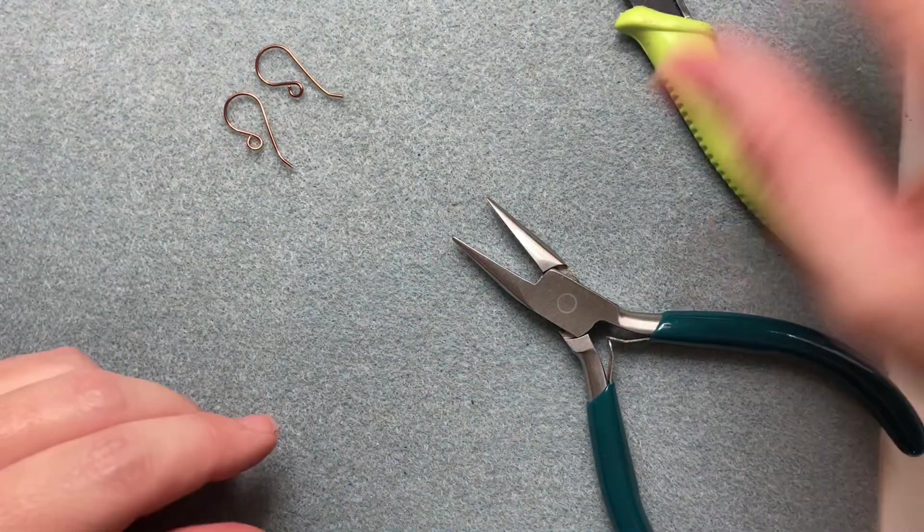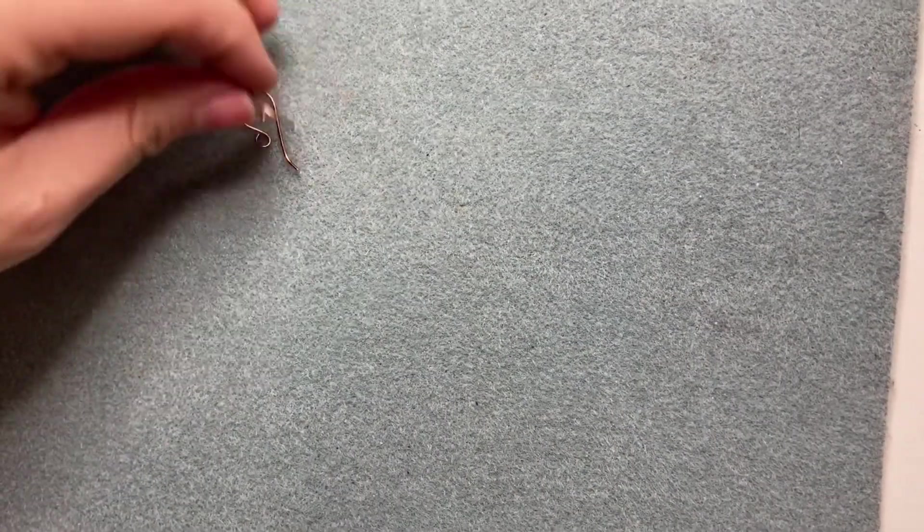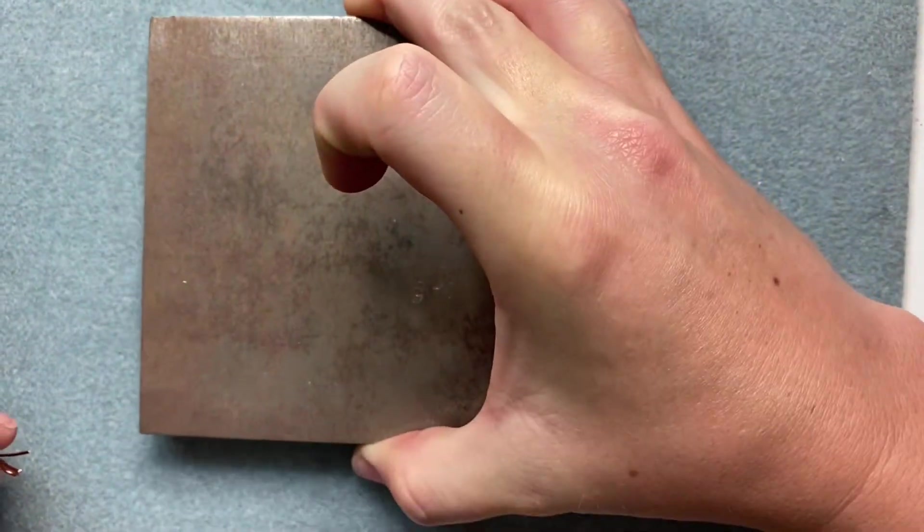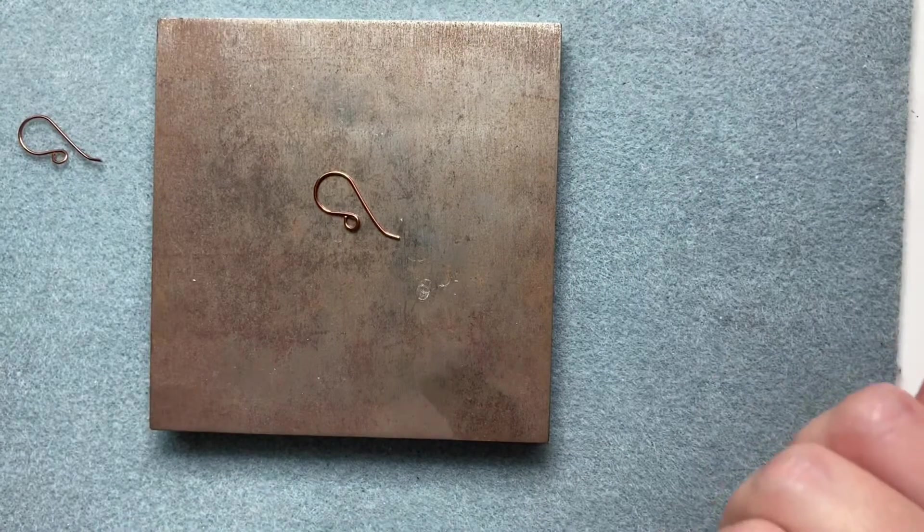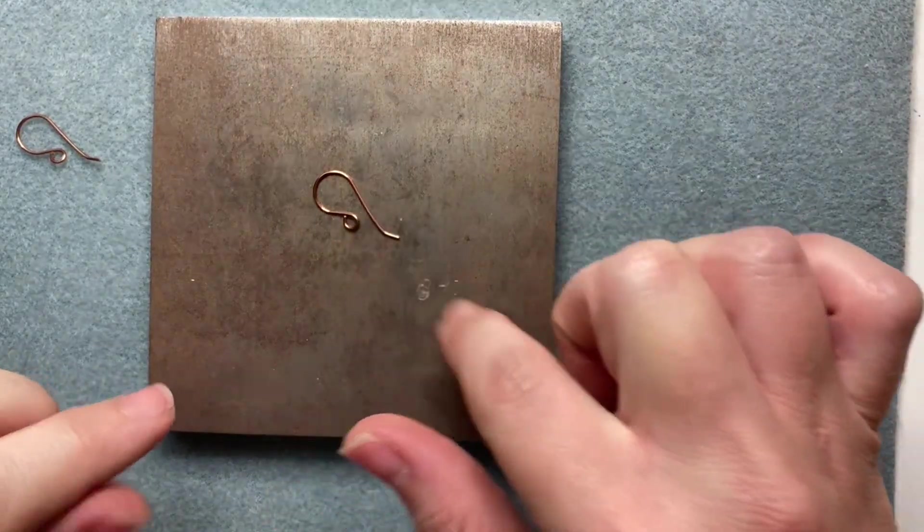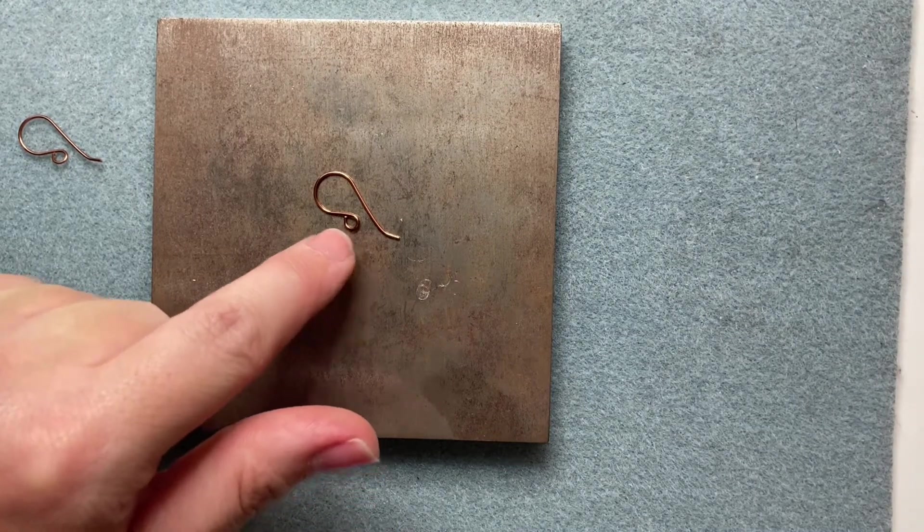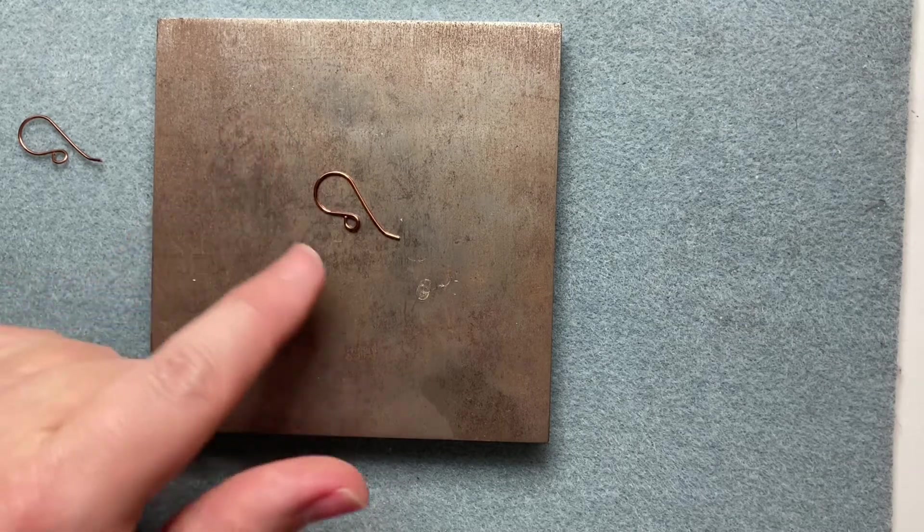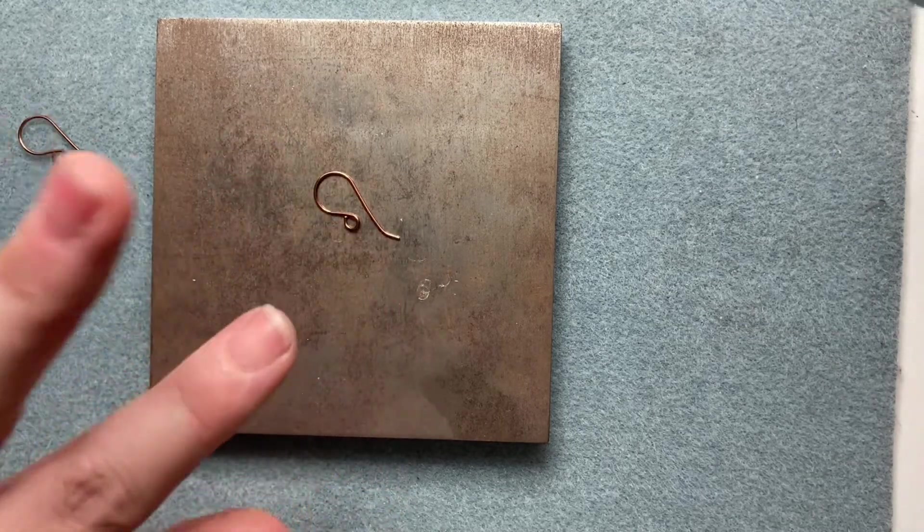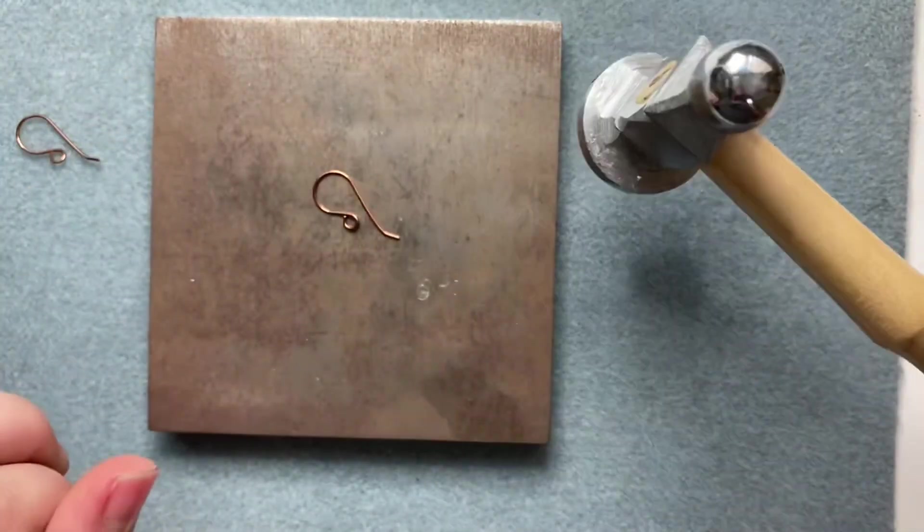So now I'm going to take my bench block. It's a little bit hard to see with the camera angle, but my earring is not laying completely flat, so that's why we use the chasing hammer to just gently tap on the earring front side and back side.